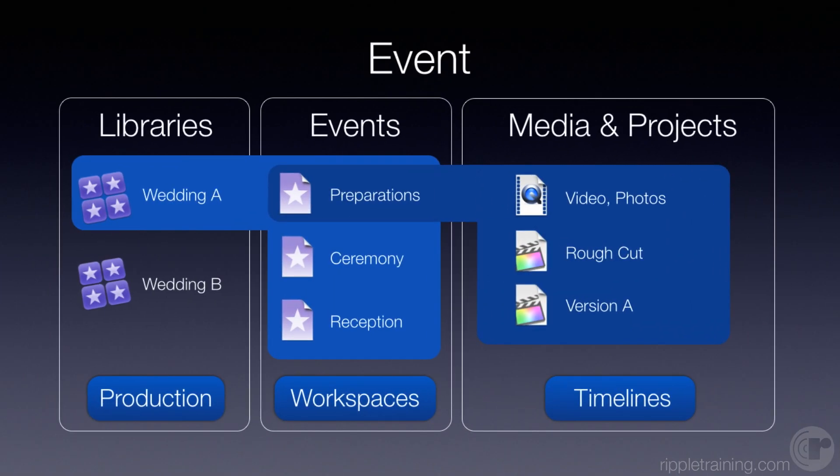Here's one last example. A lot of you do event videography — maybe you're a wedding shooter, or you shoot bar mitzvahs, live events, sporting events, or musical concerts. One way to think about it: all the media related to that event would be in one master library — in this case, a wedding. Inside, it would be broken down into substructures: preparation, ceremony, reception. Within those individual events would be the individual clips, the rough cut, and the versions. It's really up to you how to organize your own work, but these are examples to get you thinking about how you might set up your libraries.